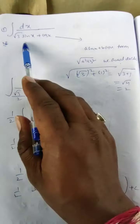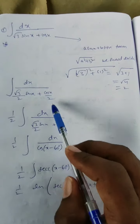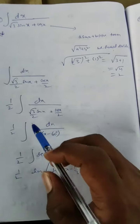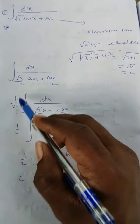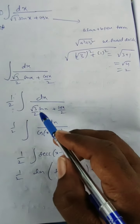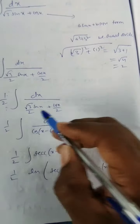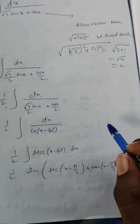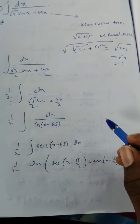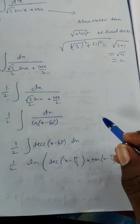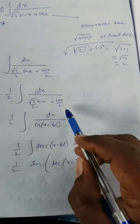So the integral becomes (1/2) ∫ dx / (√3/2 · sin x + 1/2 · cos x). Now, √3/2 is sin 60° and 1/2 is cos 60°. So we rewrite the denominator using these known trigonometric values.